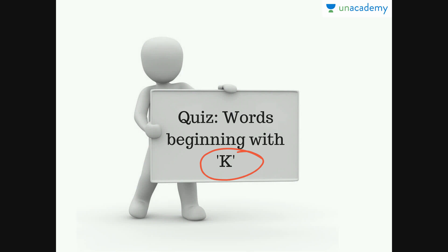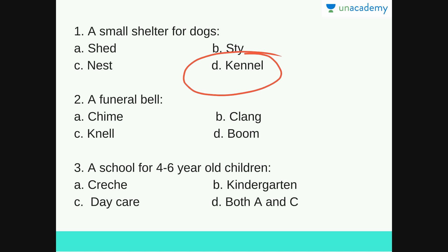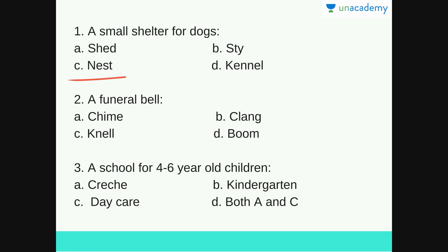Let's look at the first question: A small shelter for dogs. Options are shed, stye, nest or kennel. The answer is D — Kennel. A shed is a roofed structure for storage or used as a workshop, also used for sheltering animals such as cows and buffaloes. A stye is where pigs live. Nest is for birds. So the answer is D, kennel — a small shelter for dogs.